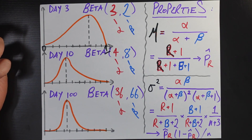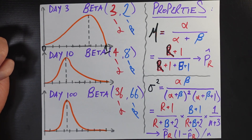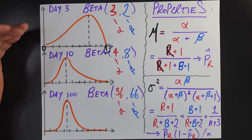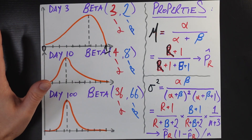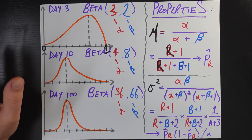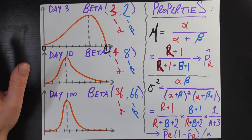Hopefully it's more clear now what people mean when they say the beta distribution is a probability of probabilities. That is kind of a useless catchphrase, but it is cool to say. Now let's go into some of the mathematical properties of the beta distribution — we've shown visually that things make sense, but let's check that mathematically things are sane.